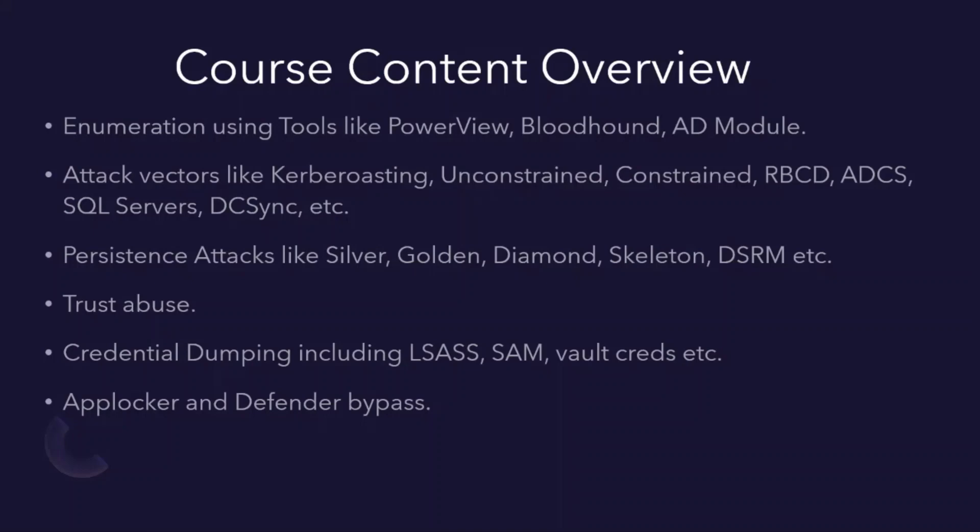You'll enumerate how many forests, domains, users, systems, and group policies are in your target environment. The attack vectors covered are Kerberoasting, unconstrained delegation, constrained delegation, resource-based constrained delegation (RBCD), and ADCS — specifically ESC1 and ESC3 (ESC6 was removed in a newer update). They also cover SQL servers, DCSync attacks, and a lot more. Persistence methods are also taught, including silver ticket, golden ticket, diamond ticket, skeleton key, and DSRM — which is the local administrator of your domain controller.